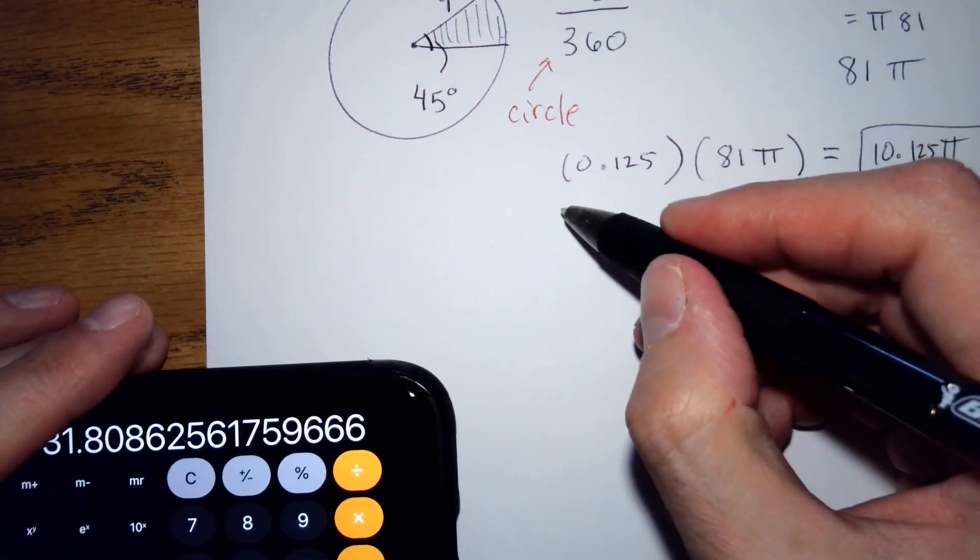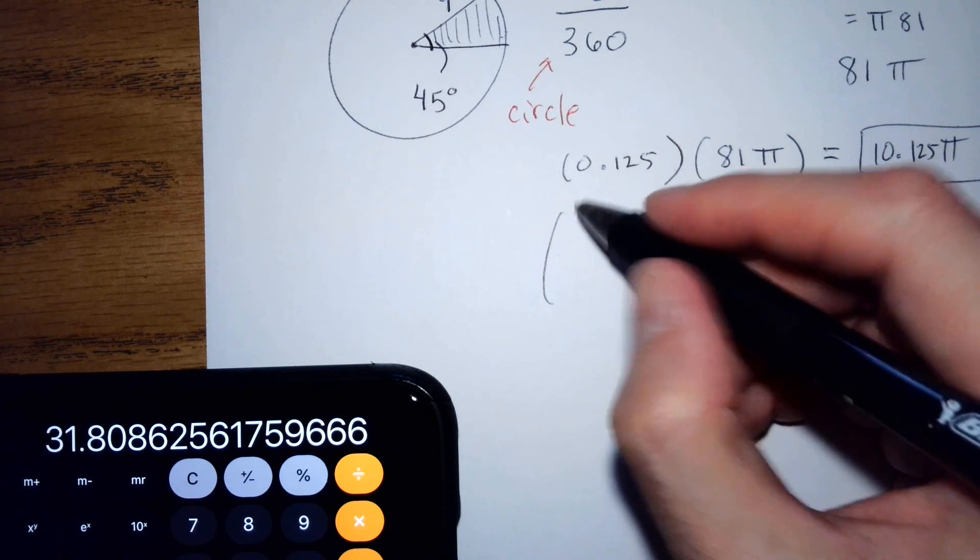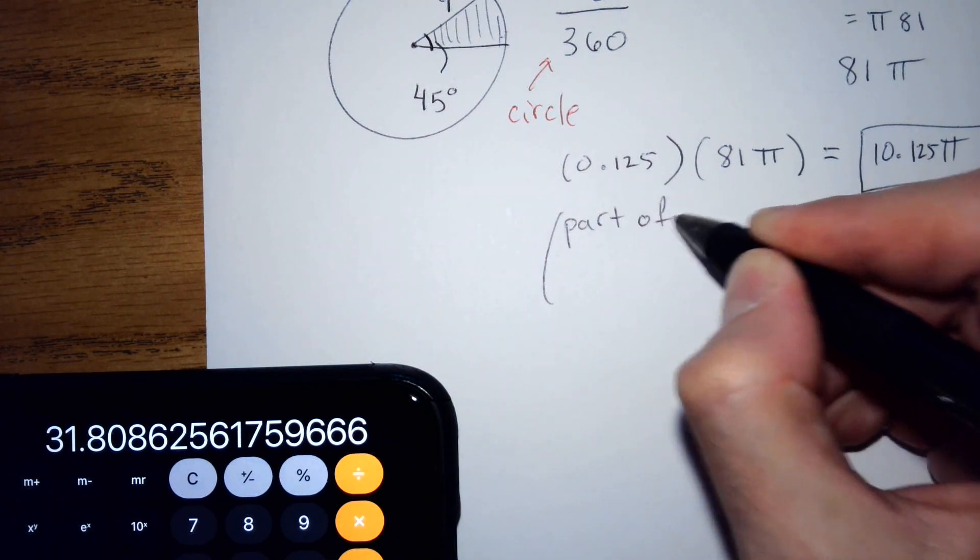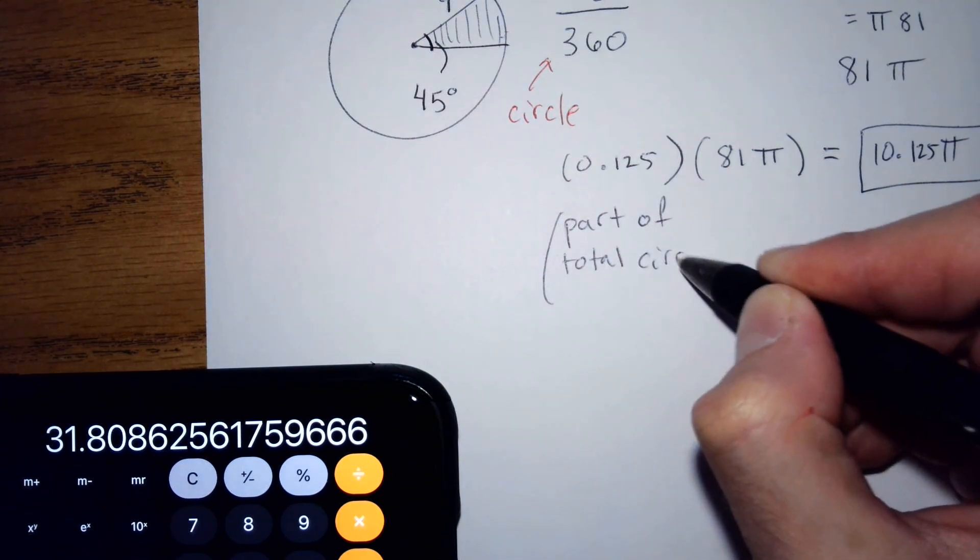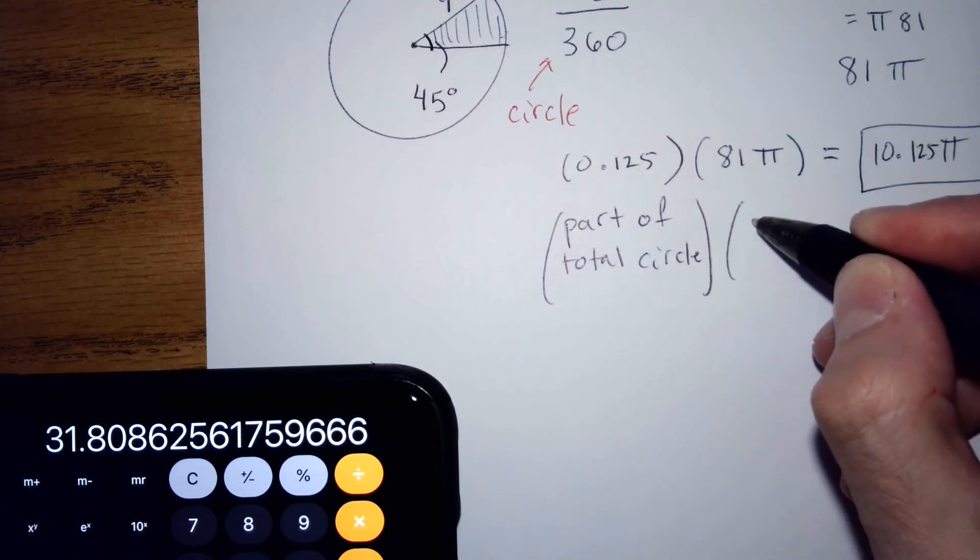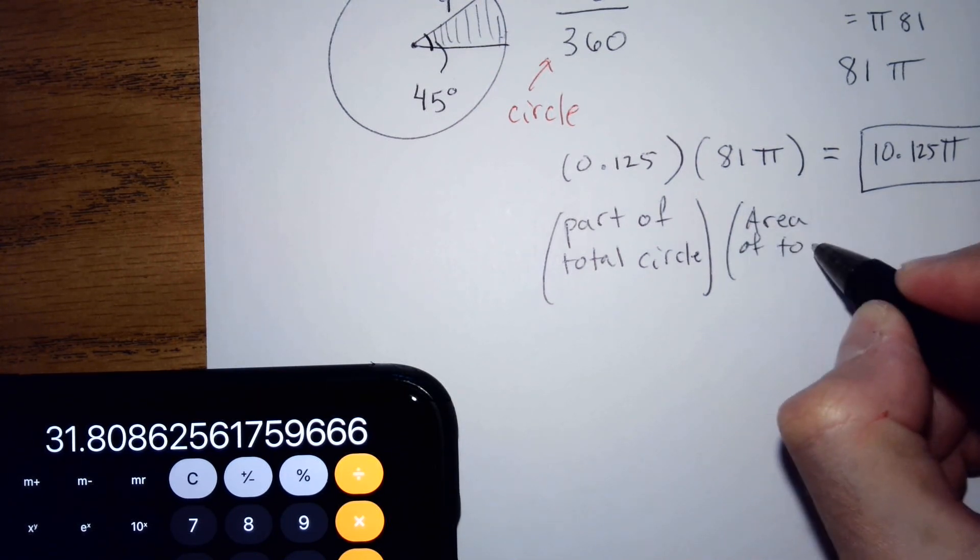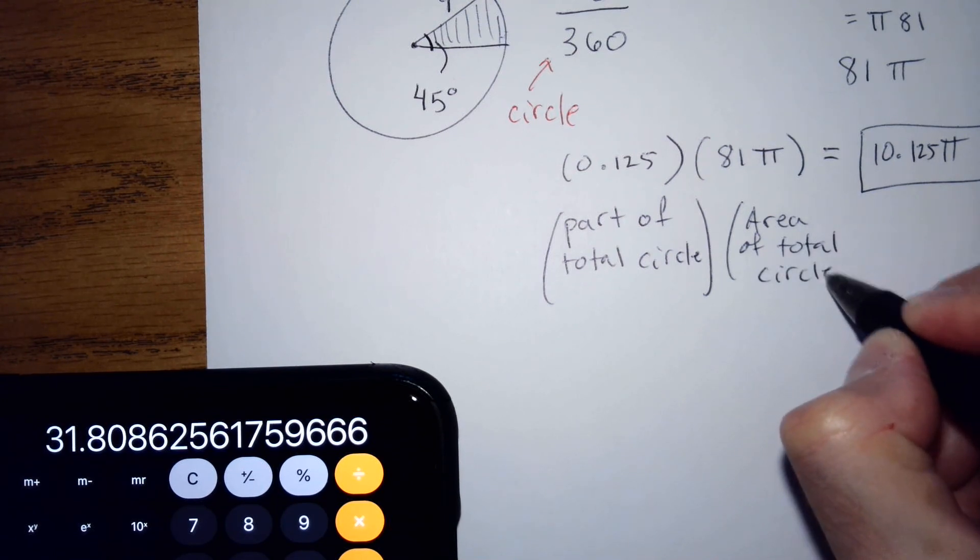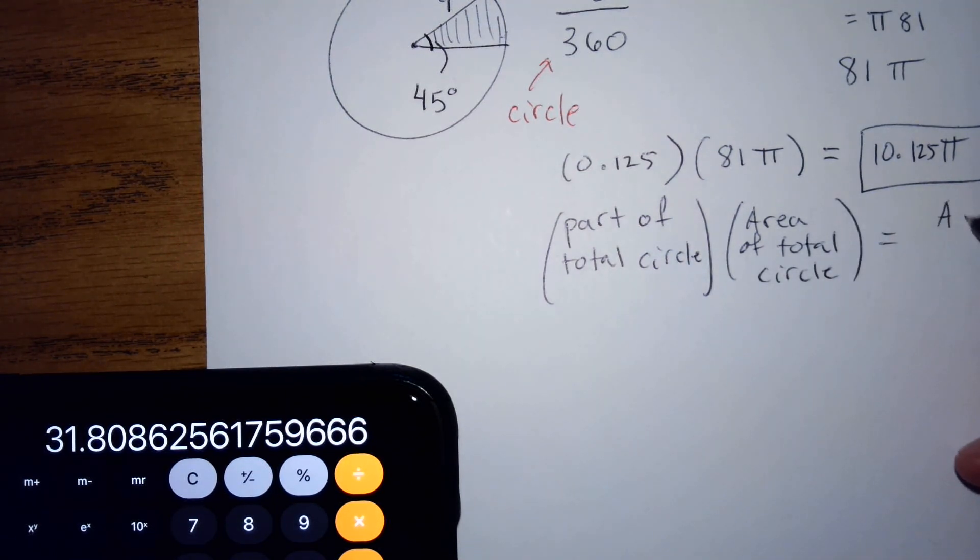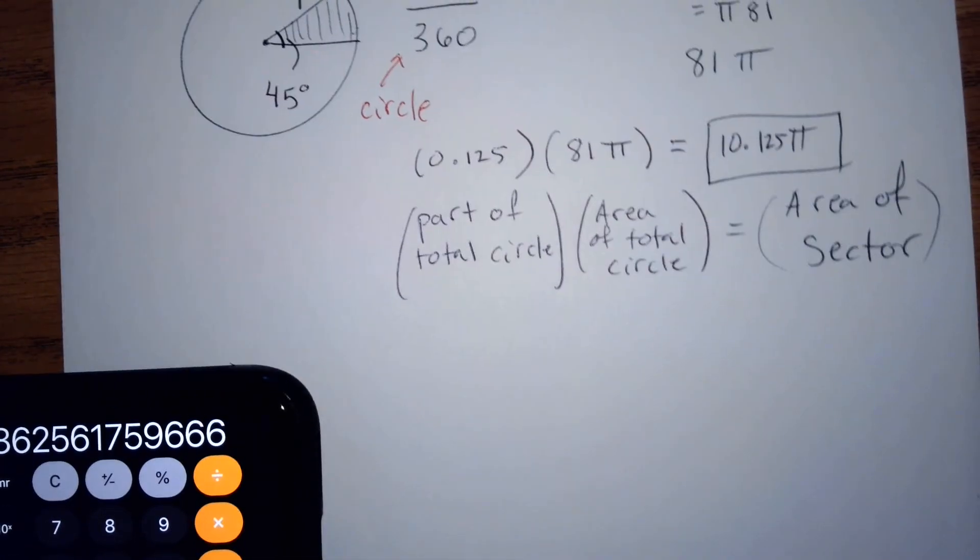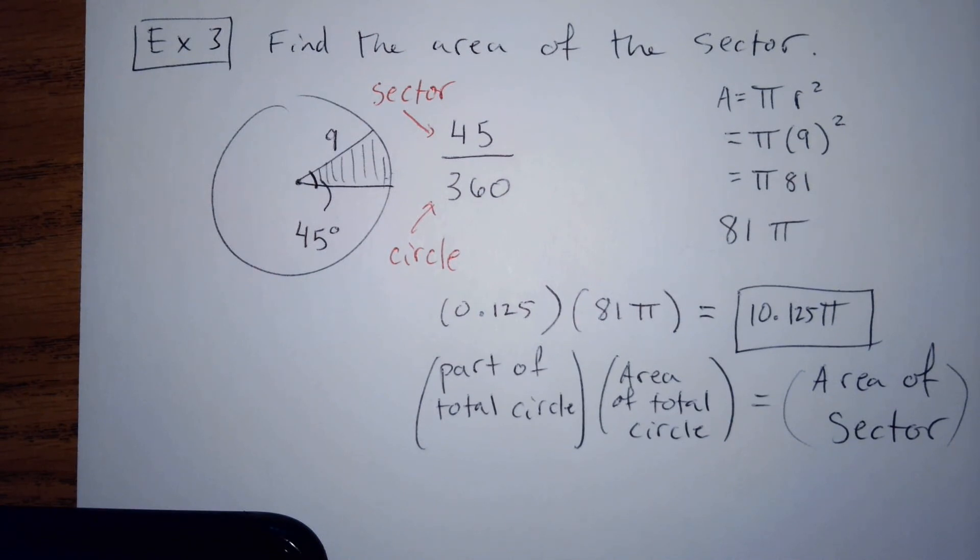The formula was part of total circle times the area of total circle, and that will equal the area of the sector. This works for radians as well. This all works for radians as well. And that's what we're going to do next, and then we'll be done.